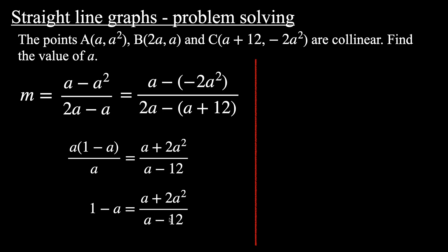Next, we can multiply by this denominator, this a - 12. So multiply both sides by a - 12, and then we'll have (1 - a) multiplied by (a - 12) equals a + 2a². Then expand those brackets out.